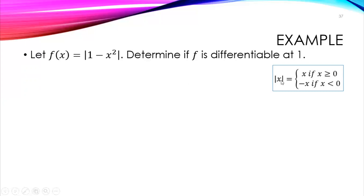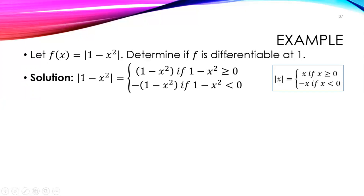In the absolute value, whatever the expression inside, we copy it for the first piece, then take the negative of it for the second piece. So the absolute value of 1 minus x squared equals 1 minus x squared if 1 minus x squared is greater than or equal to 0, and equals negative of 1 minus x squared if 1 minus x squared is less than 0. This is now our piecewise definition of the equation.